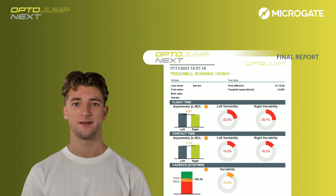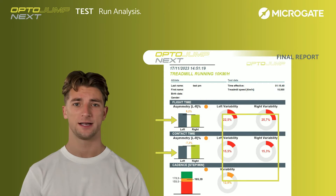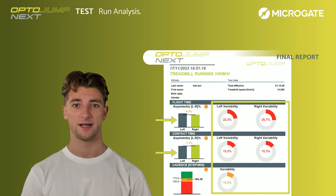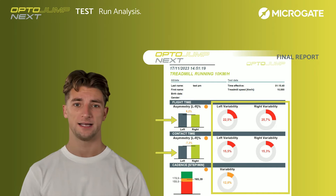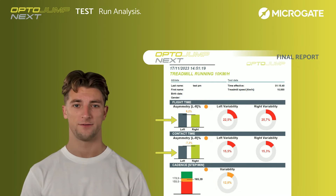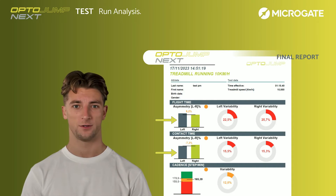Let's dive into the report. What immediately catches our attention is the significant asymmetry and variability seen across all parameters. Take the 9.2% asymmetry in flight time, indicating a longer time off the ground for the left leg. This could point to differences in strength or how the muscles are controlled between the two legs.